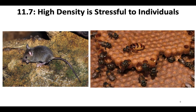Living in high densities can be very stressful to individuals — not just based on nutrition and food resource availability, but for other reasons as well. Sometimes there are ways that individuals in a high-density situation will respond through phenotypic plasticity to try to control that population density. One example is in mice: there are pheromones in the urine of adult rodents that can encourage or inhibit reproduction. At really high densities, rodents can produce a pheromone in their urine that suppresses the reproduction of other individuals in the population.